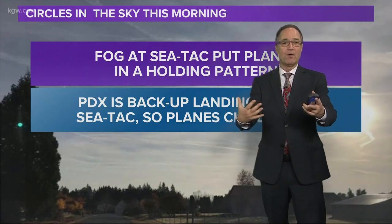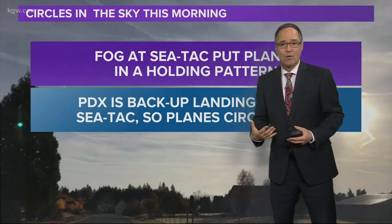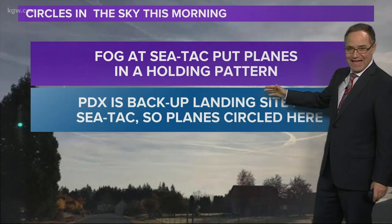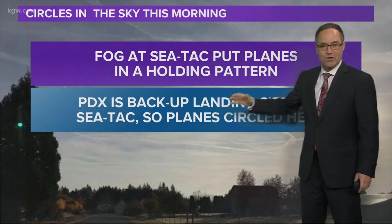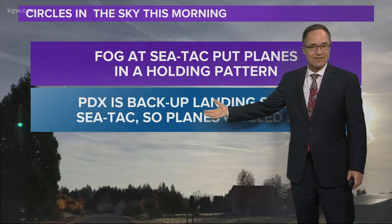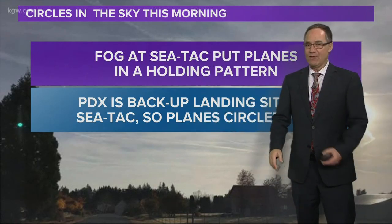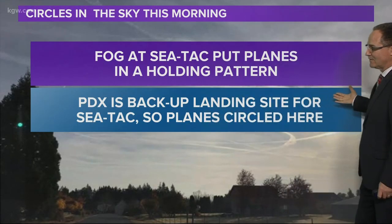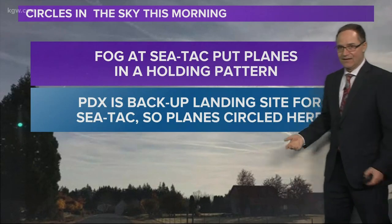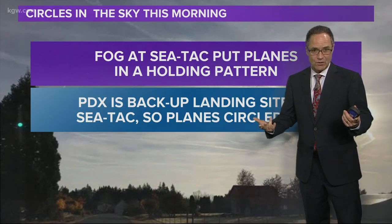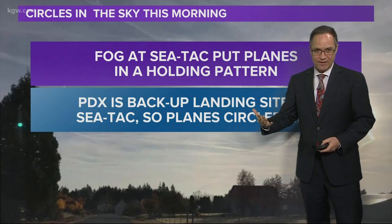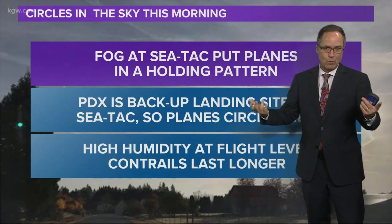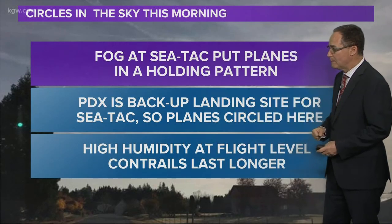Why were the planes not way up over Seattle? Because Portland is the backup landing site for Seattle and Sea-Tac. So if any of those planes had to land for whatever reason, they needed to be near an airport. That's why they were circling closer to Portland and not up around Seattle.